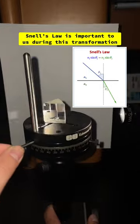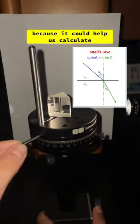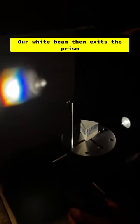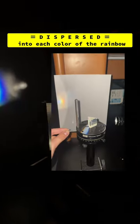Snell's law is important to us during this transformation because it could help us calculate the degree to which a color will bend. Our white beam then exits the prism dispersed into each color of the rainbow.